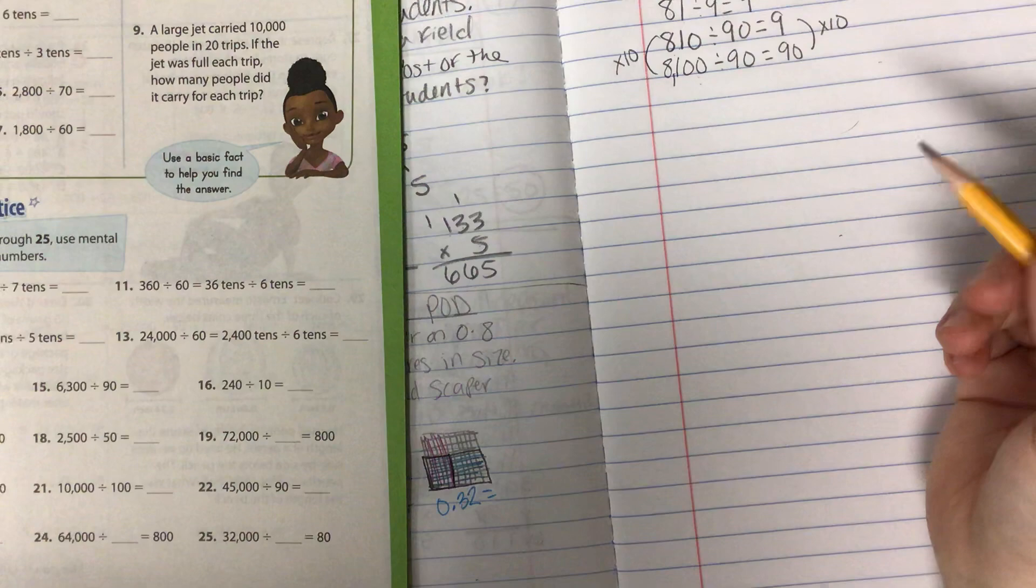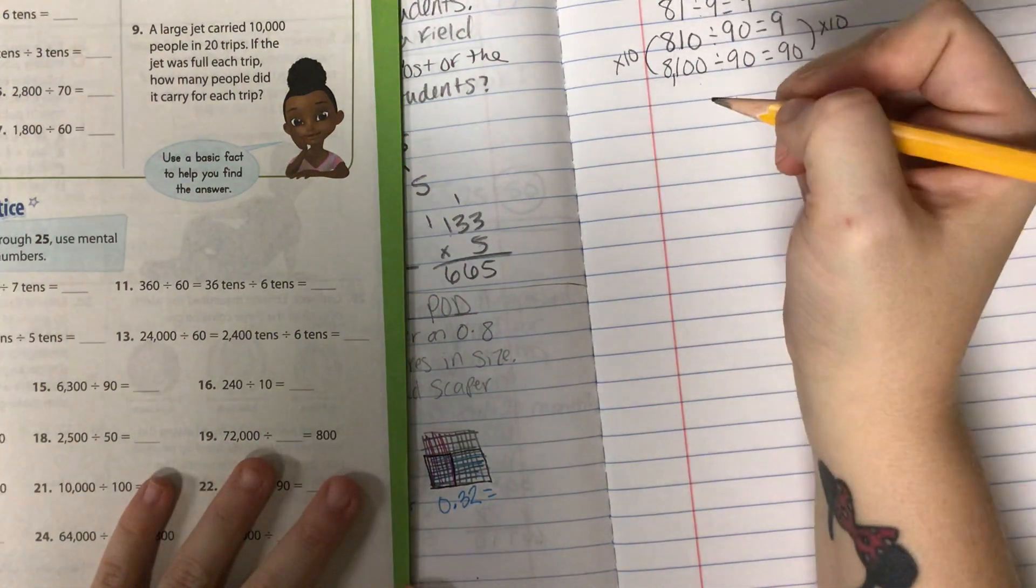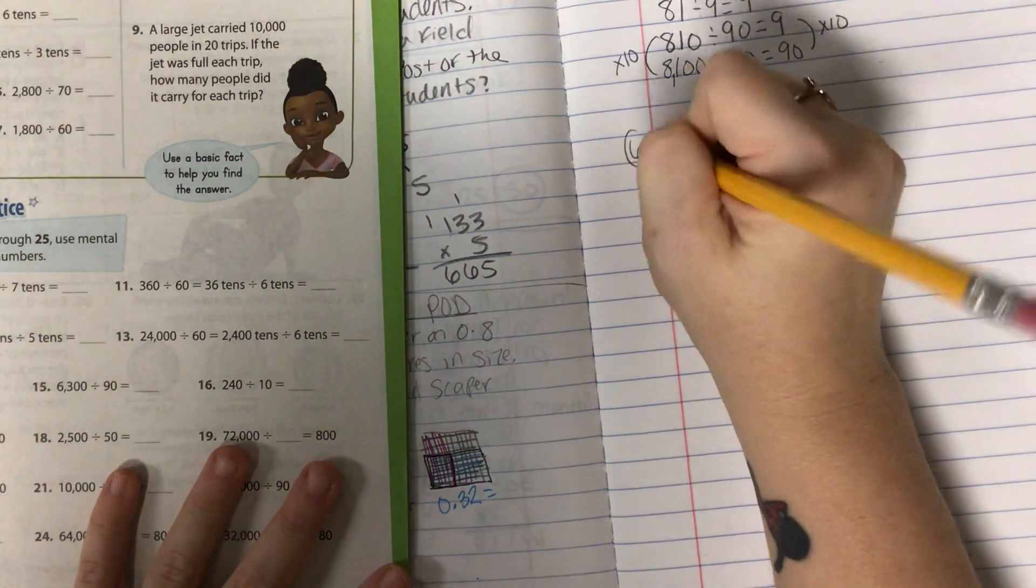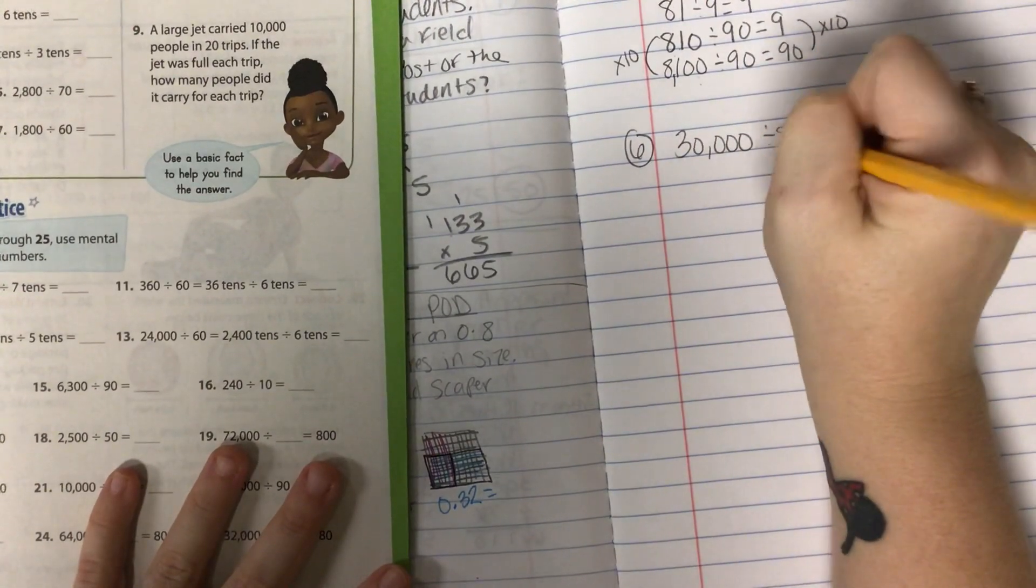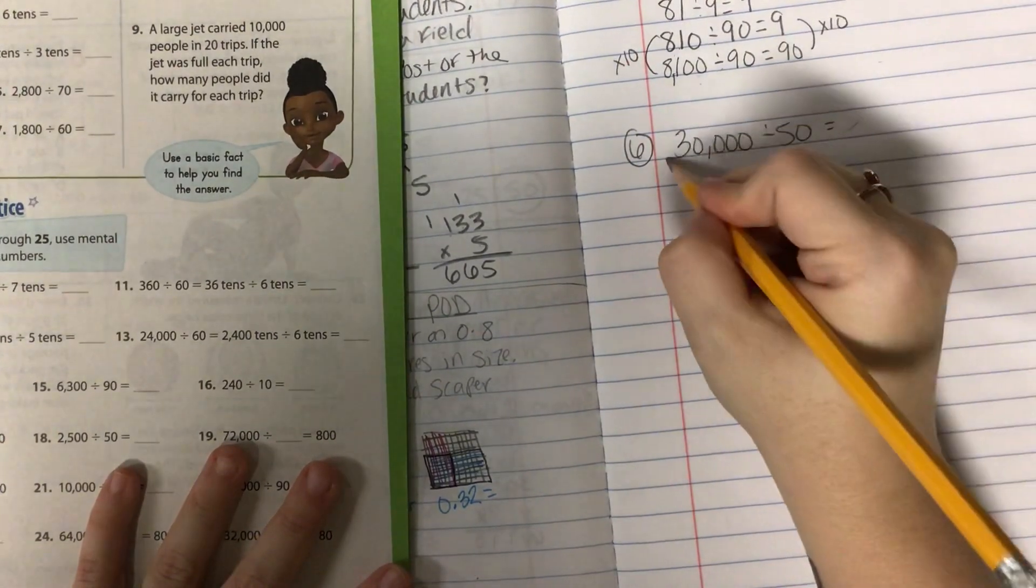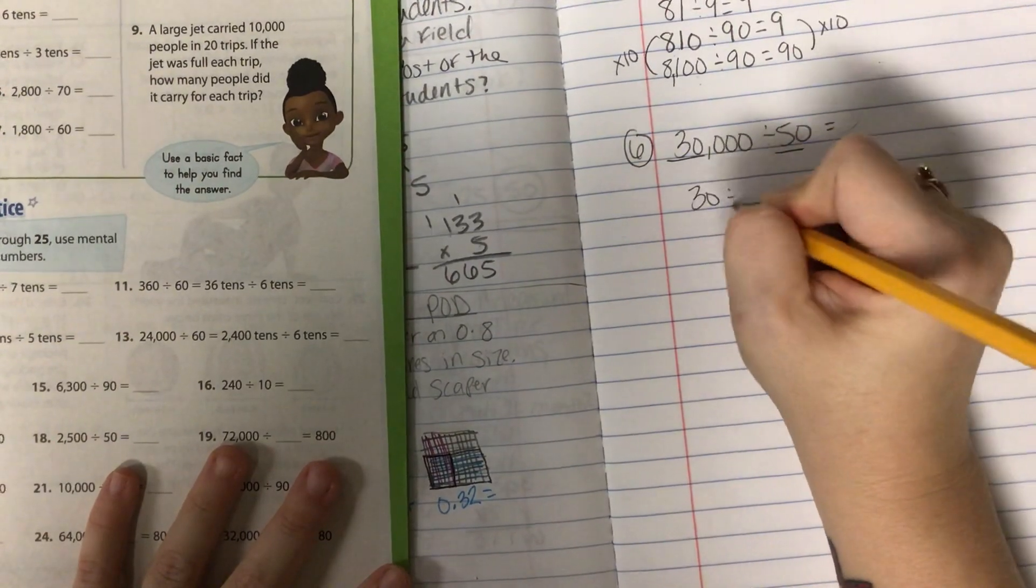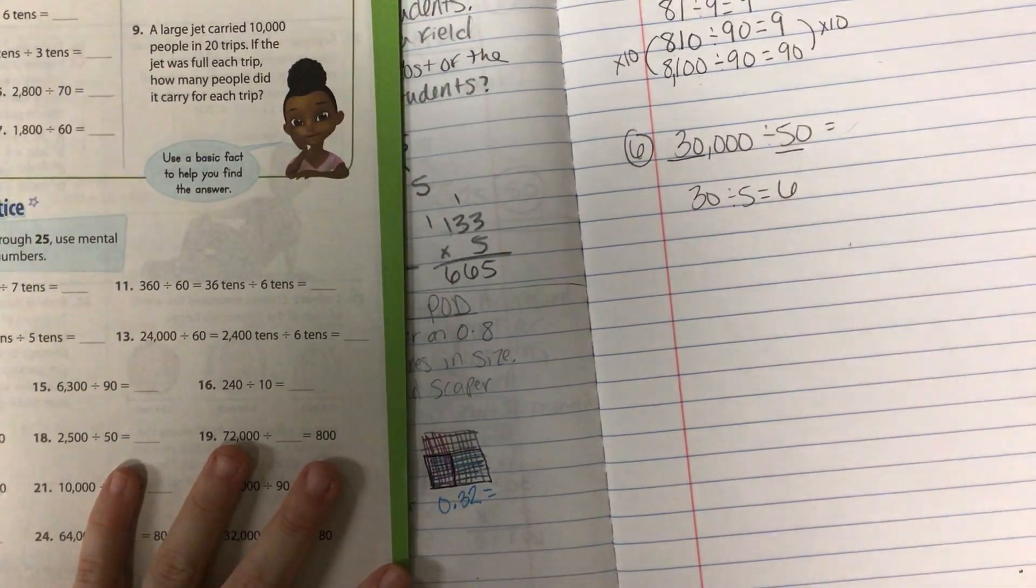Let's try one more. Let's look at number six. We have 30,000 divided by 50. We're going to take our basic numbers here and we have 30 divided by five and that gives me six.